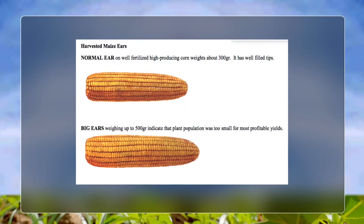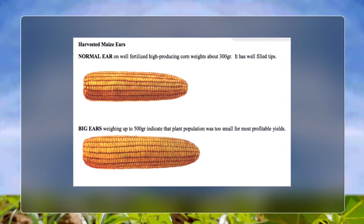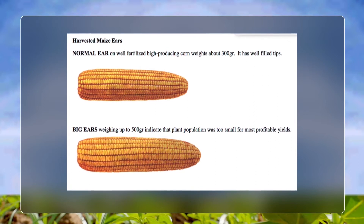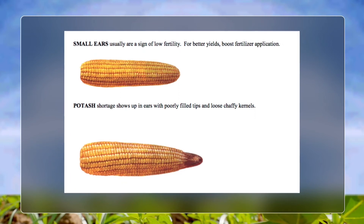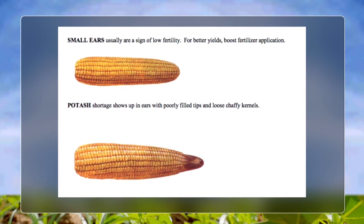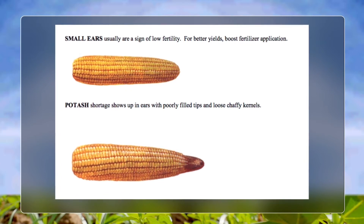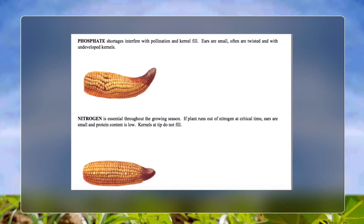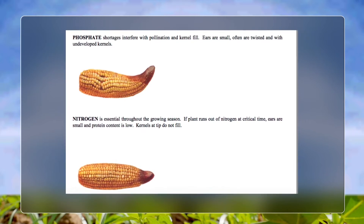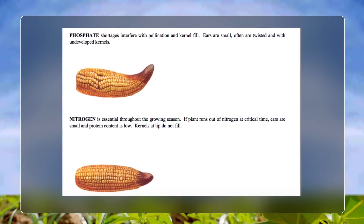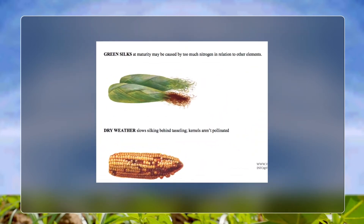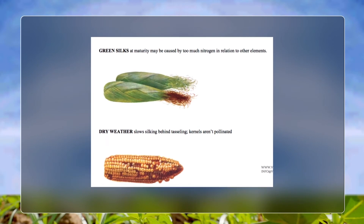Harvested maize ears: a normal ear on well-fertilized, high-producing maize weighs about 300 grams and has well-filled tips. Big ears weighing up to 500 grams indicate that plant population was too small for most profitable yields. Small ears are usually a sign of low fertility — boost fertilizer application for better yields. Potash shortage shows up in ears with poorly filled tips and loose, chaffy kernels. Phosphate shortages interfere with pollination and kernel fill — ears are small, often twisted, with undeveloped kernels. Nitrogen is essential throughout the growing season; if the plant runs out of nitrogen at a critical time, ears are small, protein content is low, and kernels at the tip do not fill.